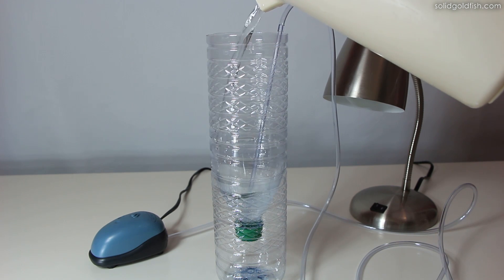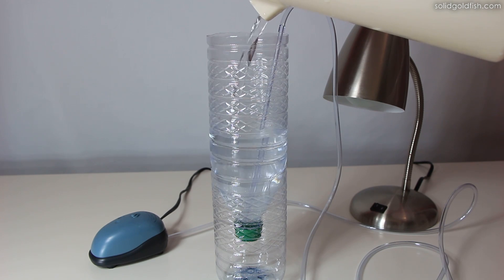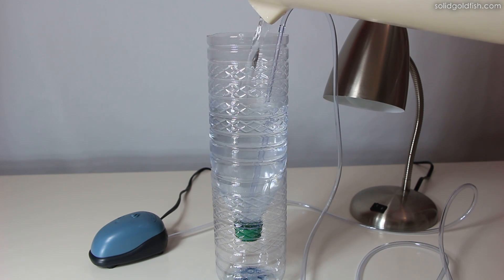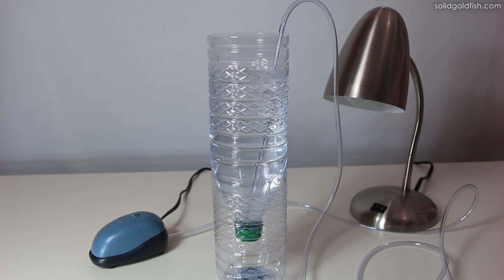Fill the brine shrimp hatchery about four-fifths of the way full with warm tap water. There's no need to use dechlorinator for this. Turn on the air pump.